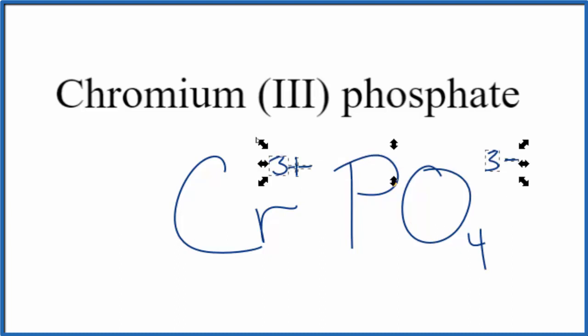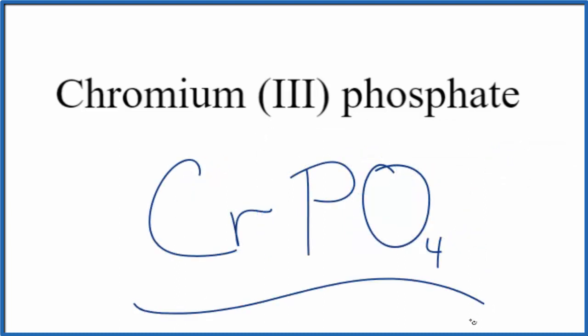So this is the formula for chromium-phosphate, C-R-PO4. And this is Dr. B. Thanks for watching.